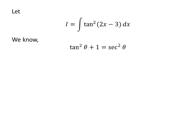We know the famous trigonometry identity: square of tangent of theta plus 1 is equal to square of sec of theta. From this identity, we get that square of tangent of 2x minus 3 is equal to square of sec of 2x minus 3 minus 1.